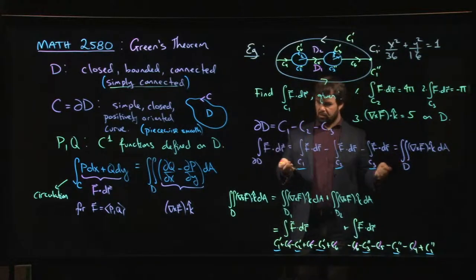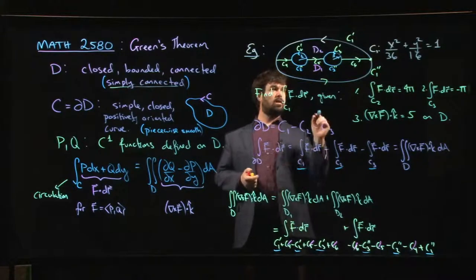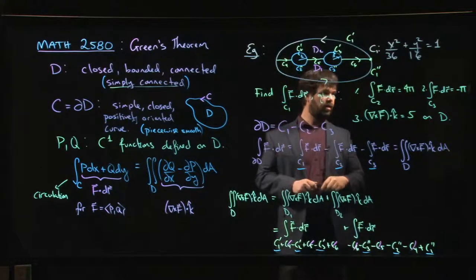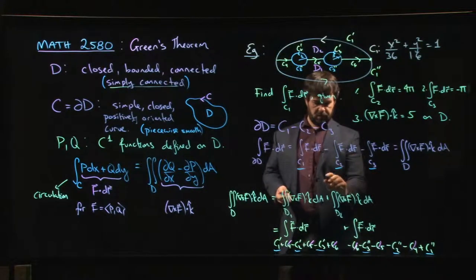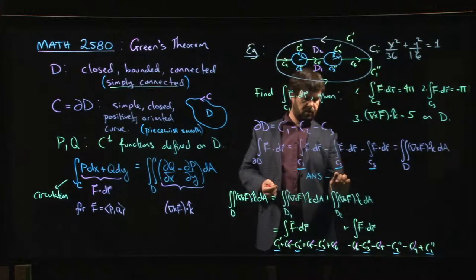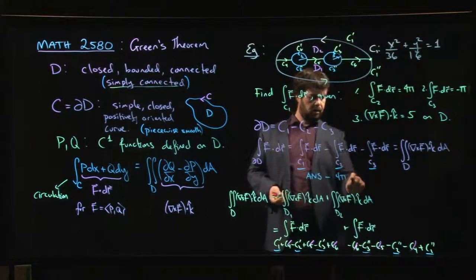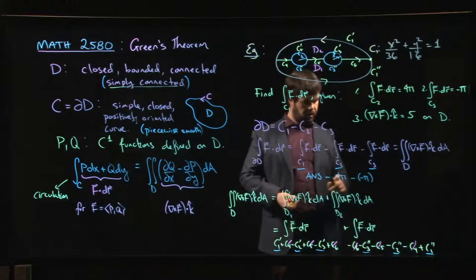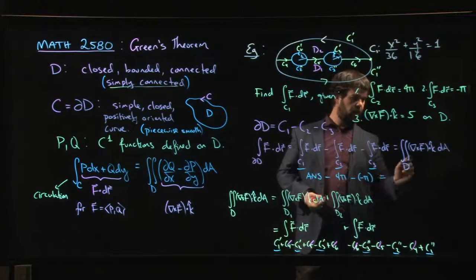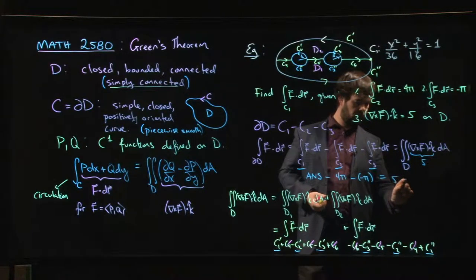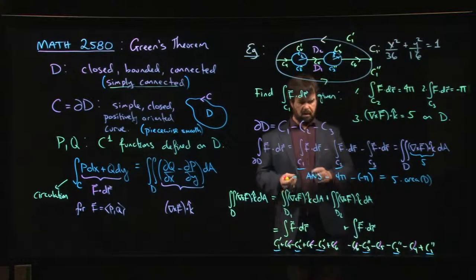Now, what about answering the question? The integral along C1 is the thing that I want. I don't know what that is. I do know what this is. This is my answer, this is the thing that I want. Minus 4π, minus minus π, because that's given to me. Minus 4π equals, so this I'm given is 5. So it's 5 times the area of D.